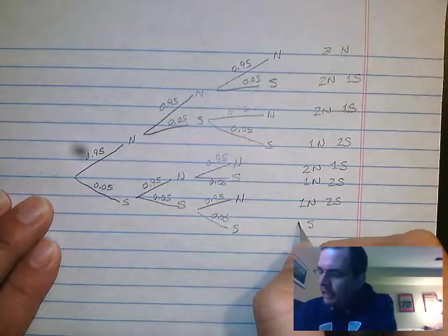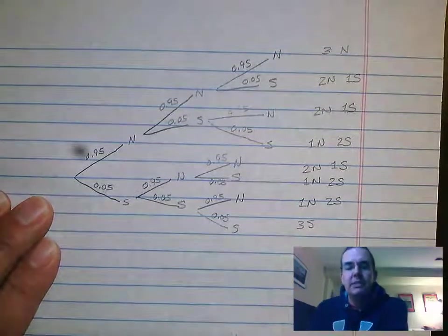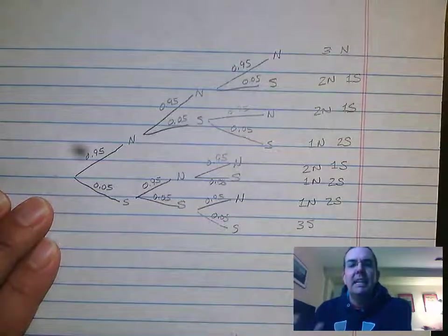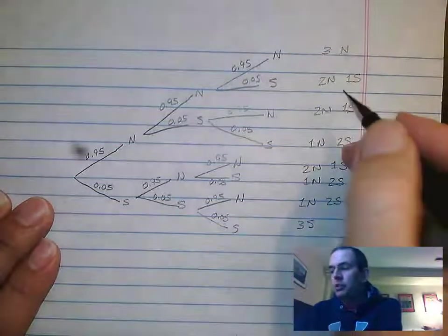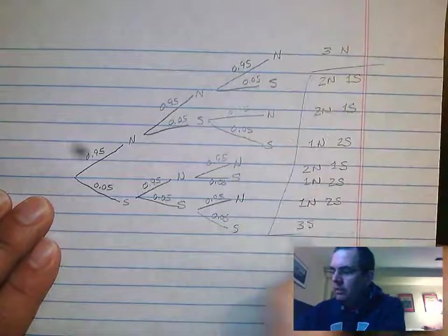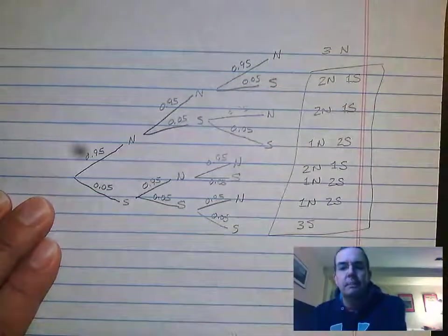So then it's asking you what is the probability of getting at least one. At least one literally is all of those guys—that's at least one.